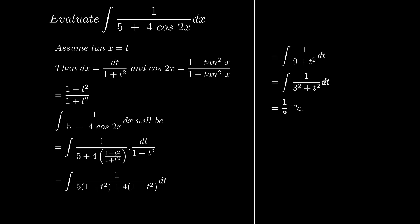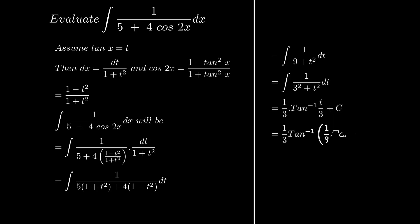This is 3 squared plus t squared. Hence it is the integration of 1 by 3 squared plus t squared, giving the result 1 by 3 tan inverse multiplied by 1 by 3 tan x, plus constant.